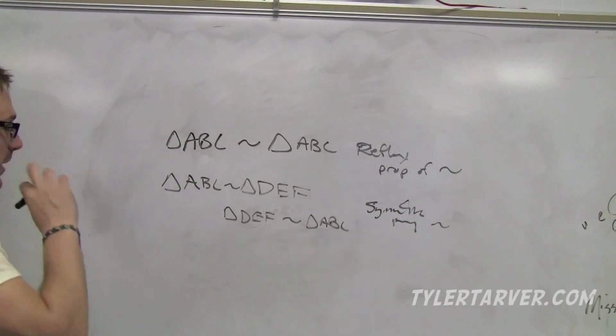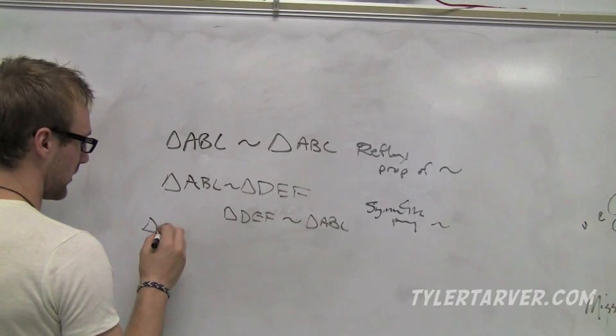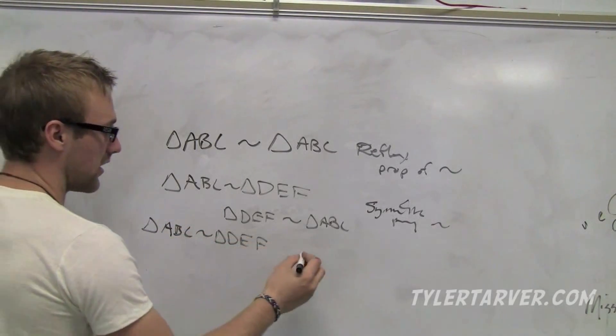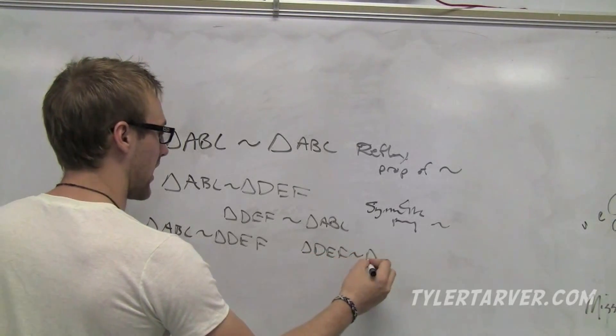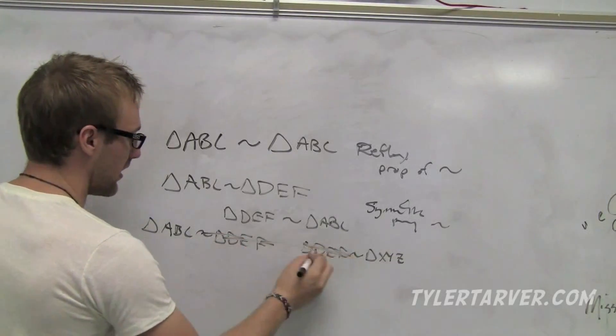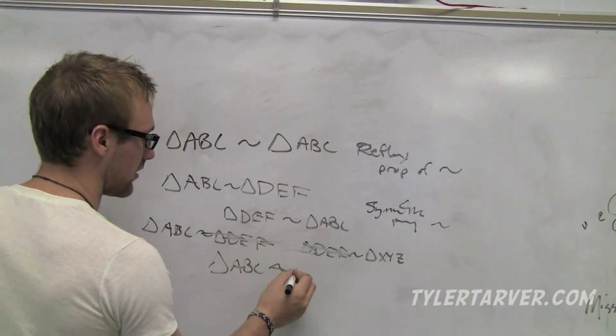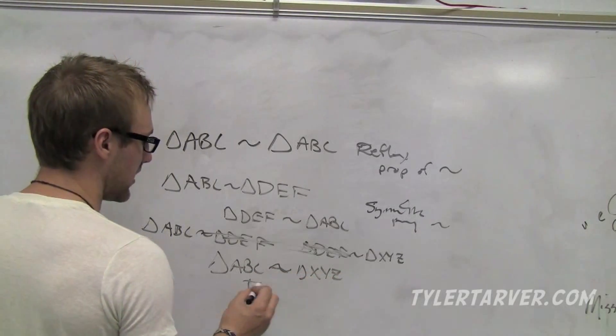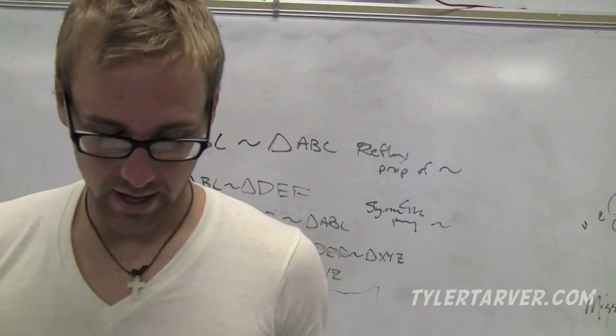And the last one is the transitive. We all know transitive. Triangle ABC is similar to DEF, and triangle DEF is similar to triangle XYZ. So you can cut out the middle man and just say triangle ABC is similar to triangle XYZ. That was too much talking. That's called the transitive property of similarity.